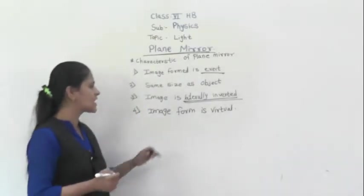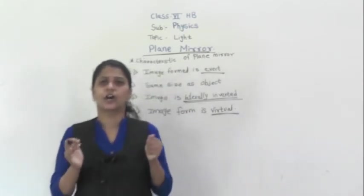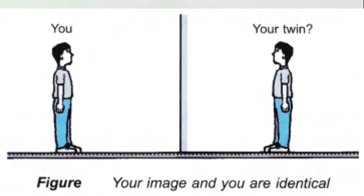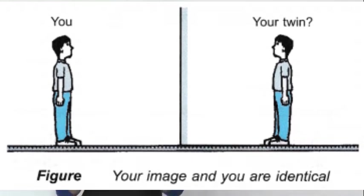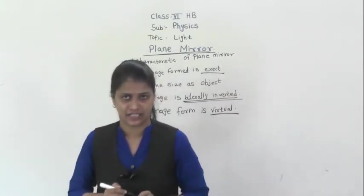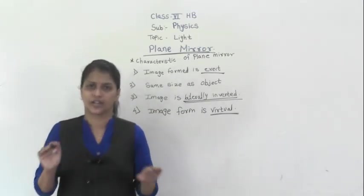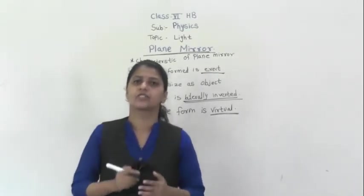The next characteristic is that the image formed is virtual. Virtual means — when you are standing in front of the mirror, you see yourself in the mirror, but are you actually there in the mirror? No. The image appears to be seen inside the mirror; it seems to be there, but actually the image is not there. The rays appear to converge, so we are able to see the image.